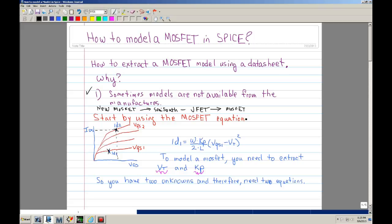So to start, we'll start with the MOSFET equation. This is the MOSFET equation which is the current times W. W is the width of the MOSFET. KP is the transconductance parameter. And then you have a constant 2 and then L. L is the length of the MOSFET. And then you have VGS. And this VT is the threshold voltage. And the VGS minus VT is squared. To model, basically you need two parameters. You need the VT and you need the KP.